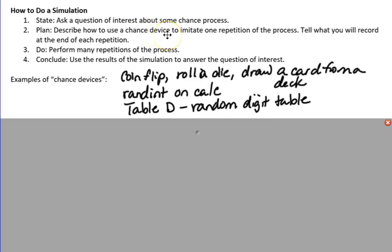Then you perform many repetitions of the process, because we talked about probability is the long-run behavior of a chance event. So you have to do a lot of chance events in order to see what the probability is. And then conclude, use the results of the simulation to answer the question of interest.